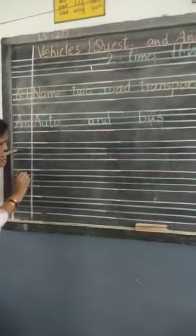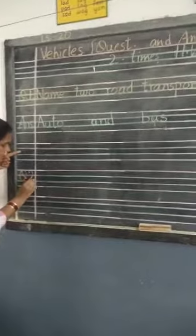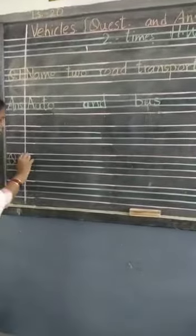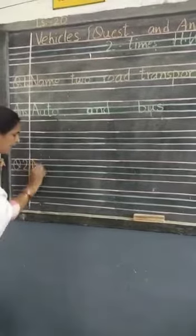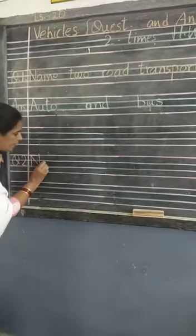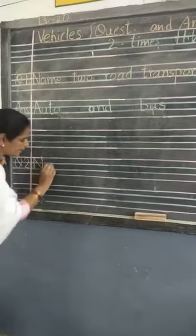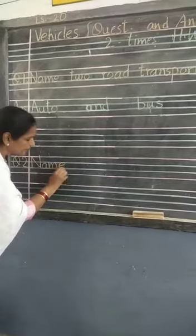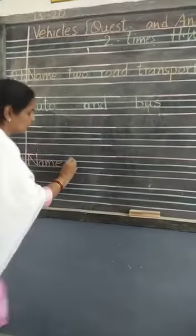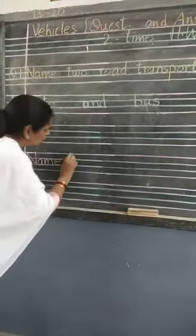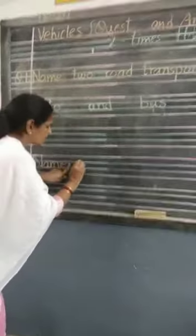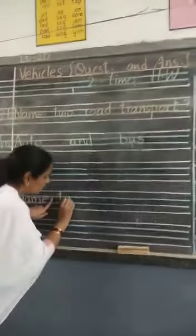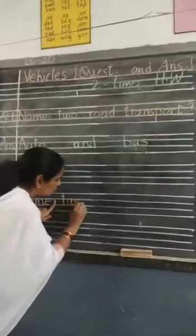Question number two. Again question: N-A-M-E — Name, finger space, T-W-O — 2, finger space, W-A-T-E-R — Water, finger space, transport.